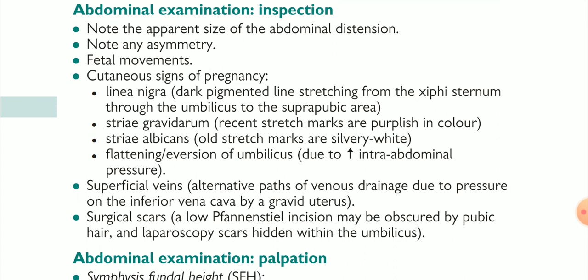Number four is the cutaneous signs of pregnancy. There are some normal and some abnormal signs of the skin which help us identify the characteristics and level of the pregnancy state. The cutaneous signs include: linea nigra — a dark pigmented line stretching from the xiphoid sternum through the umbilicus to the suprapubic area. Striae gravidarum — recent stretch marks that are purplish in color. Striae albicans — old stretch marks that are silvery white.